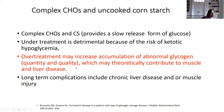This abnormal glycogen structure is thought to provoke the scar tissue formation and fibrosis progression in the liver. Long-term complications including chronic liver disease and muscle injury still occur even with these dietary interventions.